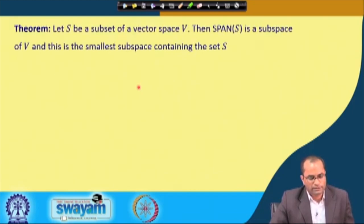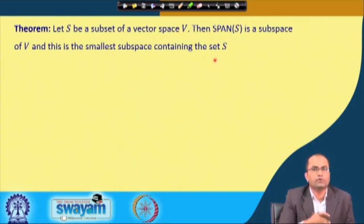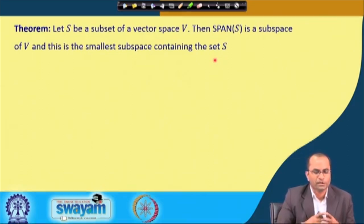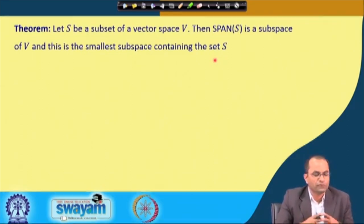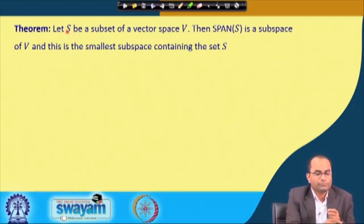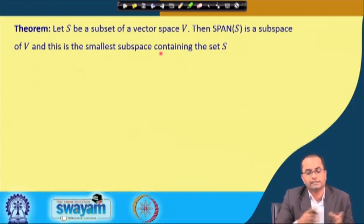There is another important result. We will not go through the formal proof, but we will see the intuition. If S is a subset of a vector space V, then span(S) — all linear combinations of the vectors in S — is a subspace of V. Moreover, span(S) is the smallest subspace of V which contains the set S.